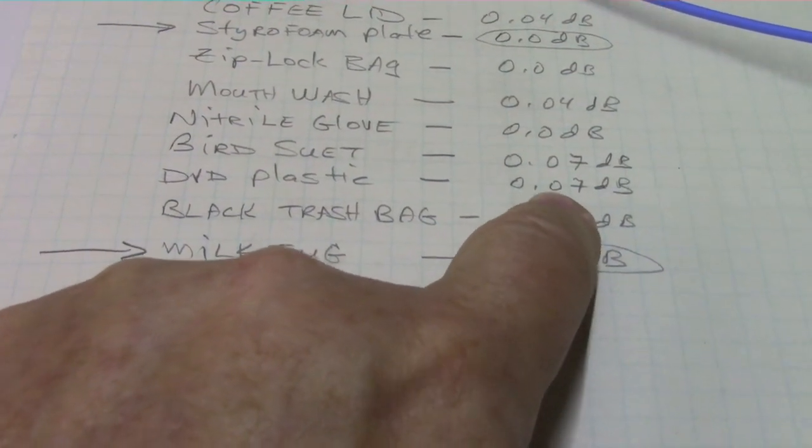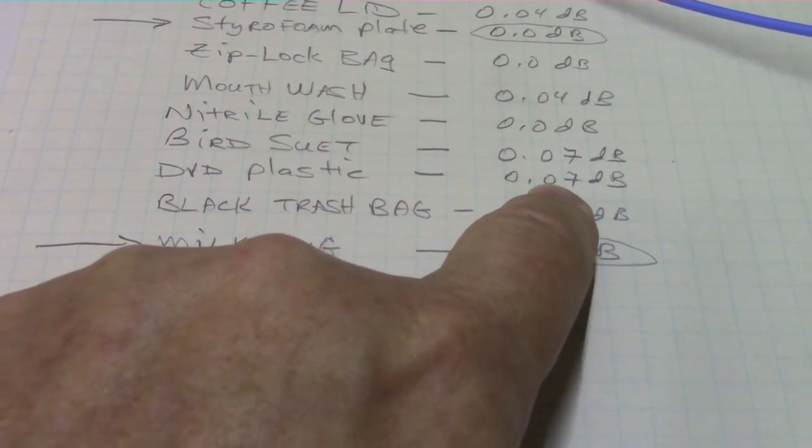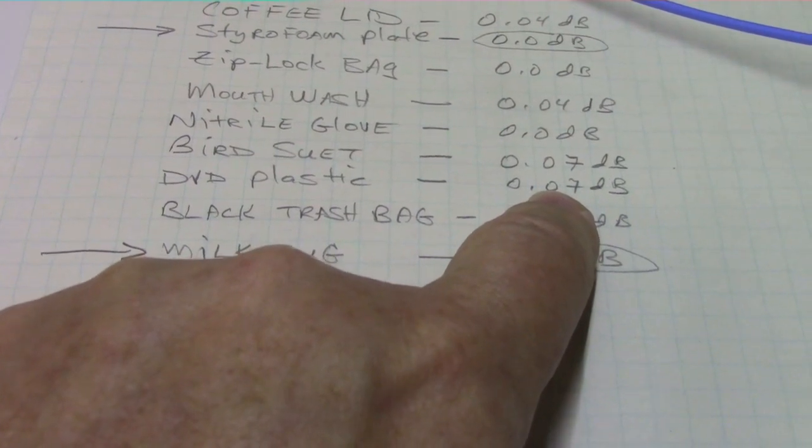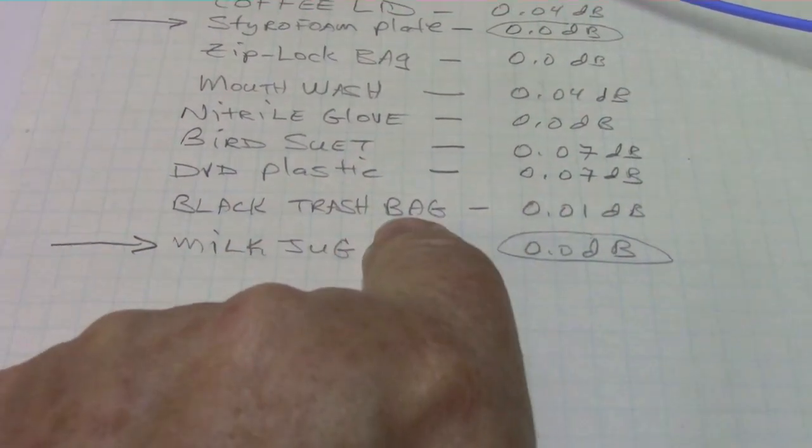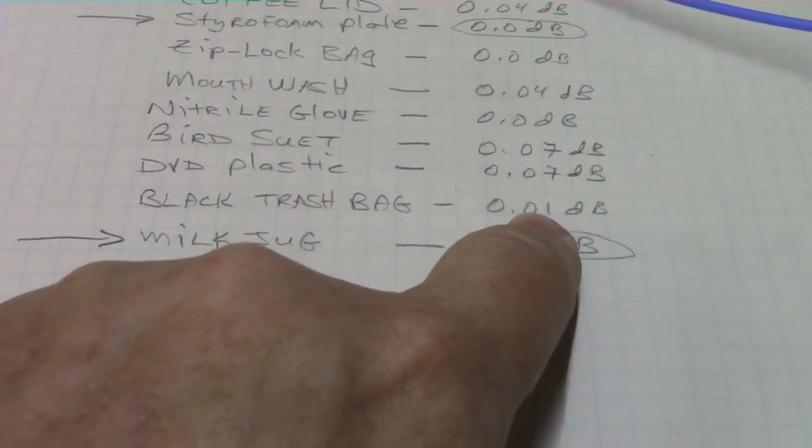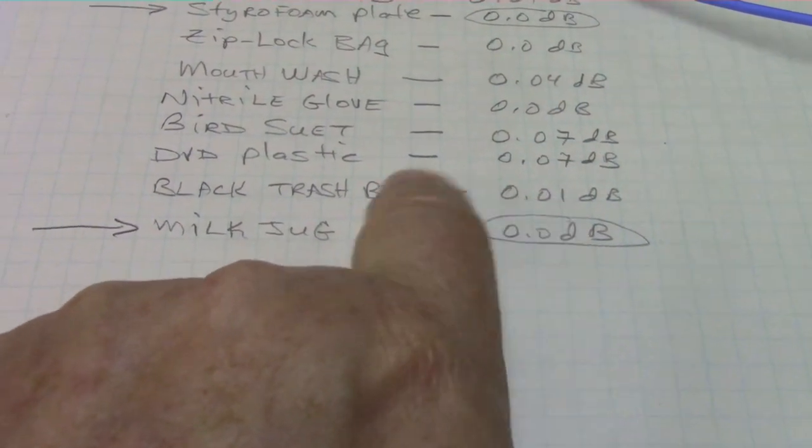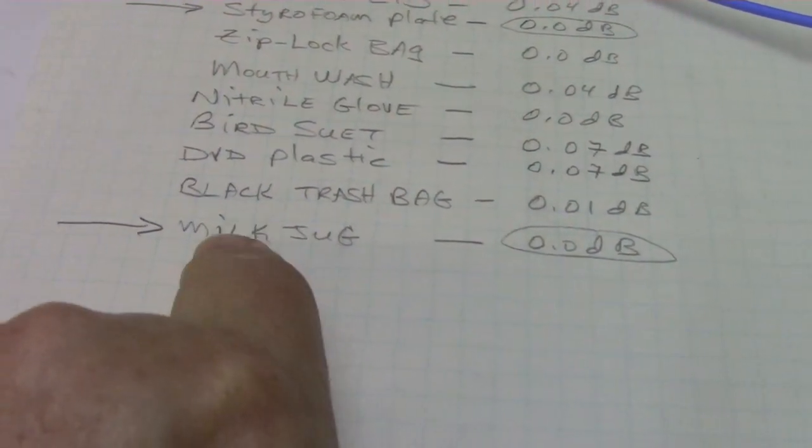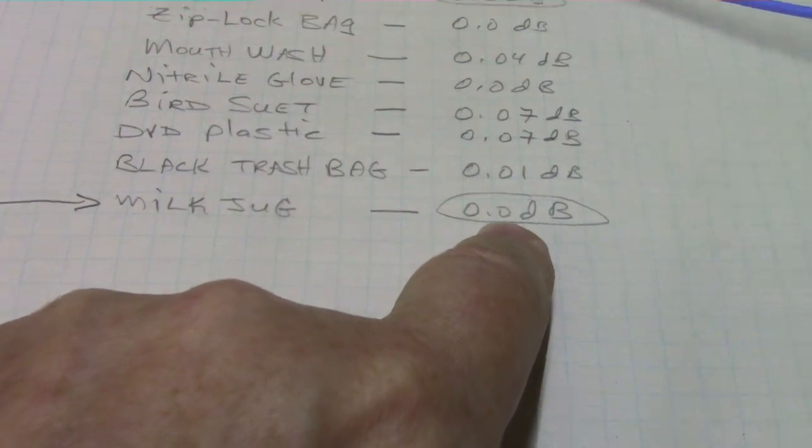Also, the DVD plastic, which is a polystyrene, I'm pretty sure, 0.07 dB. So, that was kind of surprising. The trash bag, 0.01 dB. I thought that would be a lot higher, because possibly some carbon black. And then the milk jug was 0 dB.